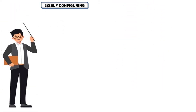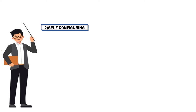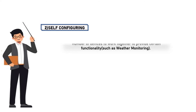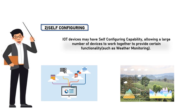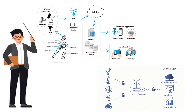2. Self-configuring. IoT devices may have self-configuring capability, allowing a large number of devices to work together to provide certain functionality such as weather monitoring. For example, in weather monitoring situations the devices will be connected with distinct sensors and should be able to connect in any situation. So, IoT devices have such a type of self-configuring capability.